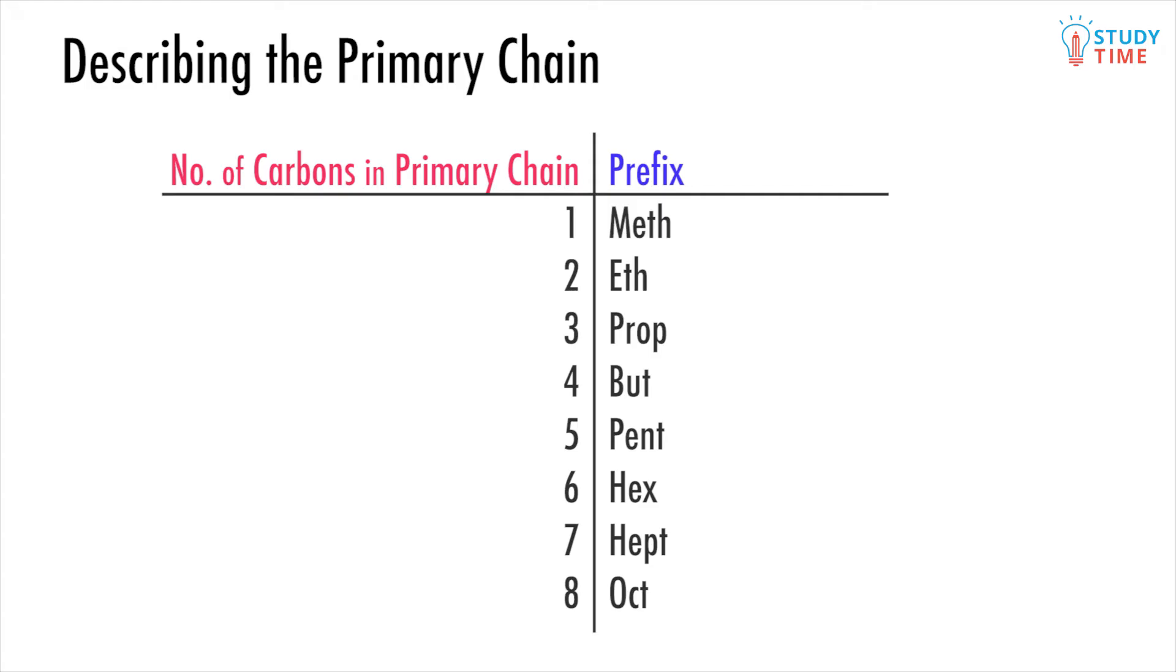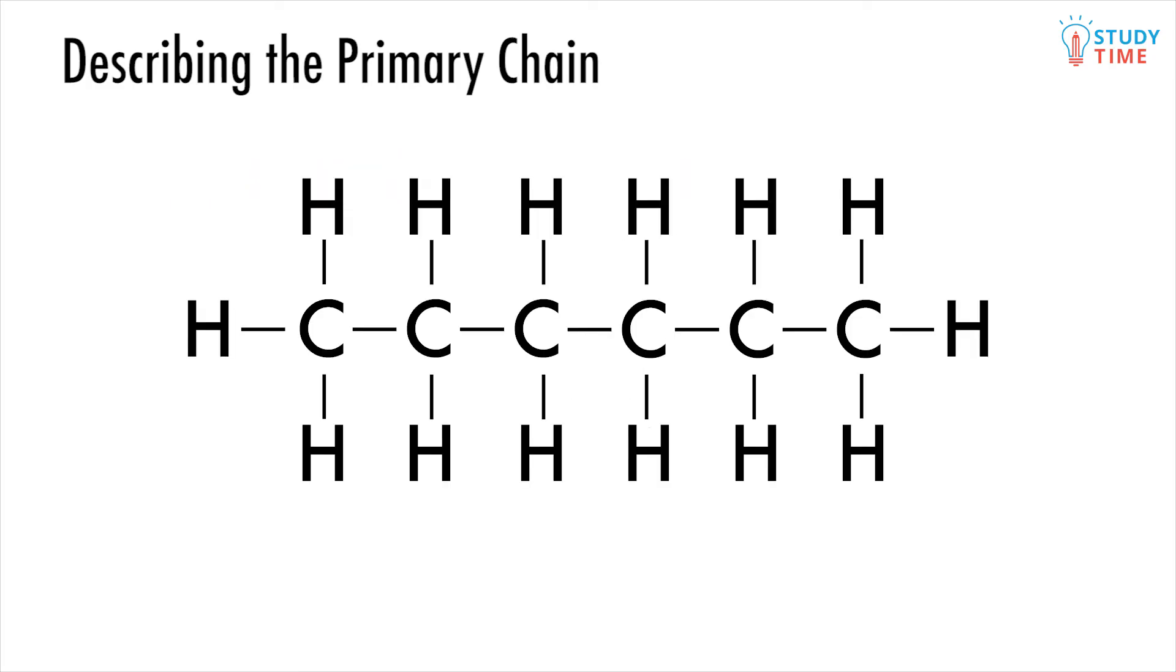The prefix tells you how many carbons are in the chain of this molecule, and a table like this one will help you remember which prefix goes with which number. But what is a primary chain, and how do we come up with this number? We simply find the longest continuous chain of connected carbons. This chain is allowed to turn corners, but must never branch off.